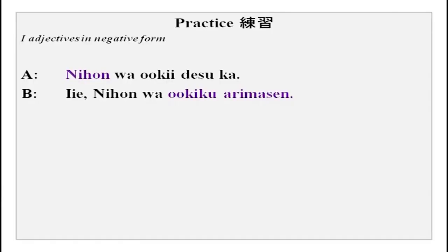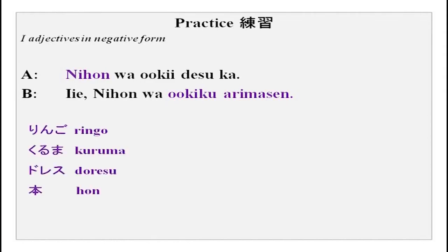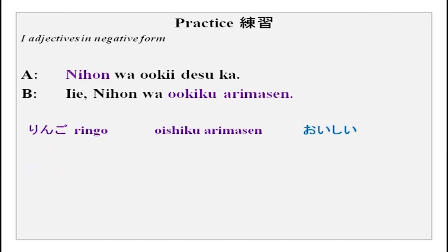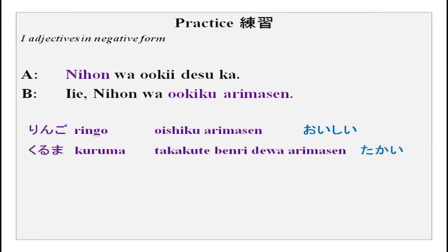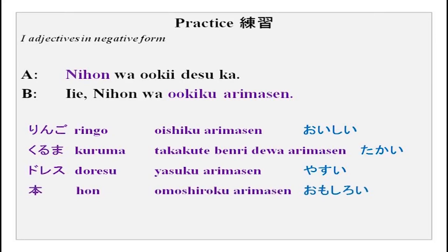This is how it is made. You can practice: Nihon wa ookii desu ka? Iie, Nihon wa ookiku arimasen. Replace Nihon with nouns like ringo, kuruma, doresu (dress), or hon — and replace the i-adjective with any i-adjective. Ringo wa oishii desu ka? Iie, oishiku arimasen. Kuruma wa takai desu ka? Iie, takaku arimasen. Doresu wa yasui desu ka? Iie, yasuku arimasen.